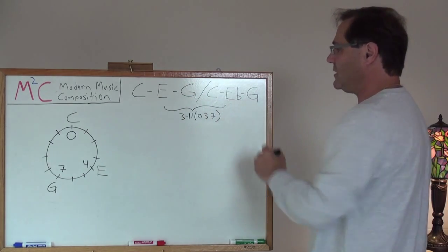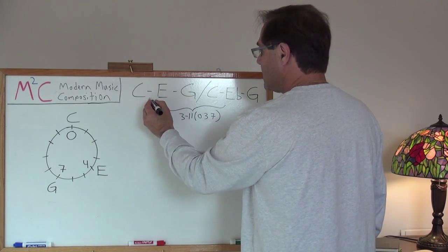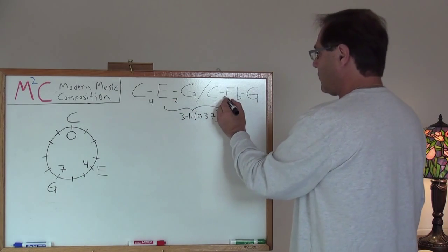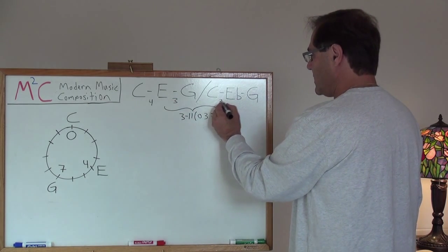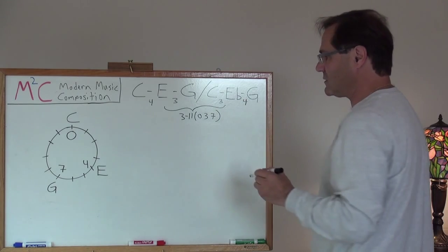So we've got C-E-G as the major, and C-E-flat-G as the minor. Remember that a major triad is defined as the first interval has 4 semitones, the second interval has 3, and over here on the minor, the first interval has 3 semitones, and the second interval has 4 semitones.